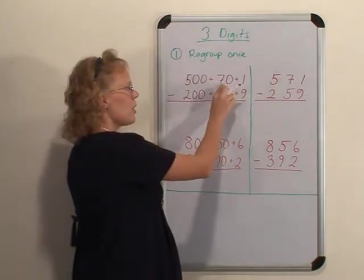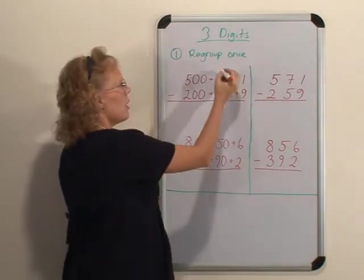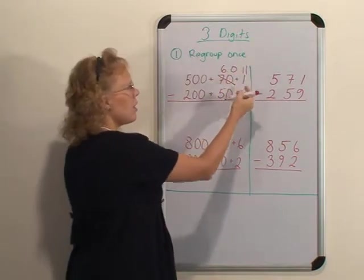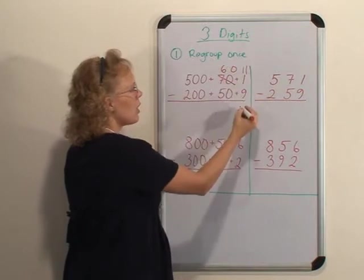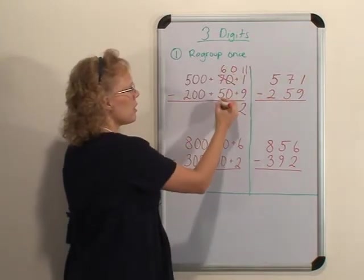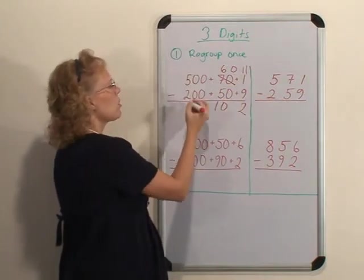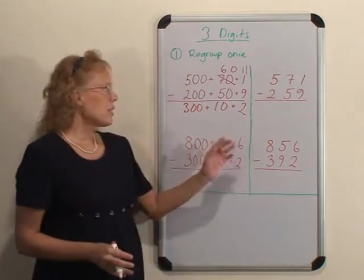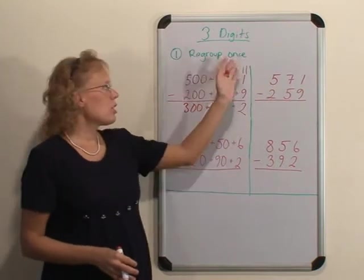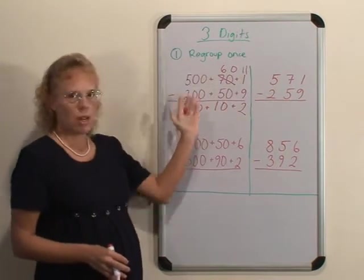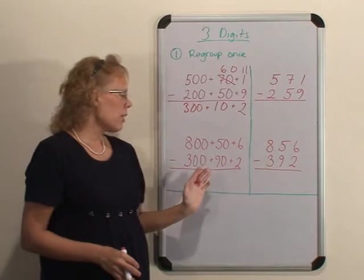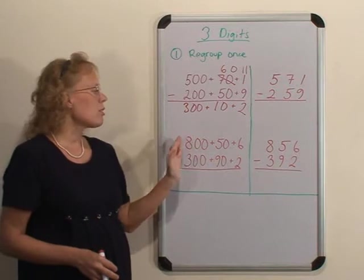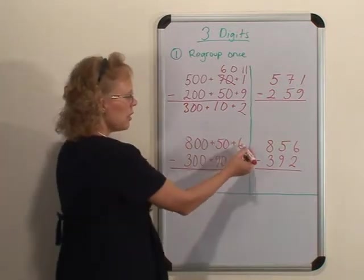For example, 571 minus 259. The regrouping happens just like with two digit numbers because it happens from tens to ones. 70 becomes 60, and in the ones column we have then 11. And then we can subtract: 11 minus 9 is 2, 60 minus 50 is 10, and here 500 minus 200 is 300. So it is identical to the two digit situation except there were some hundreds to subtract too.